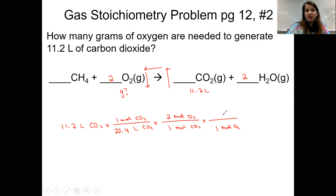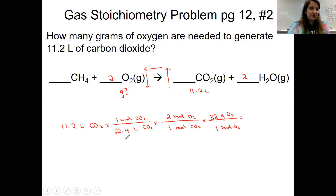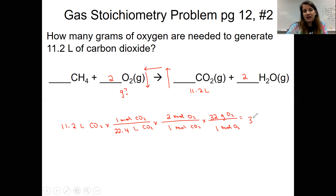Now I have moles of O₂ on top, so one mole goes underneath the molar mass — which in this case is 32. Let's solve: 11.2 divided by 22.4 (bottom), multiplied by 2 (top), multiplied by 32 (top). Our starting value tells us we get three sig figs. The answer comes out to be exactly 32, so we add a decimal and zeros to show three sig figs: 32.0 grams of O₂.